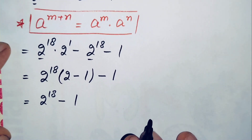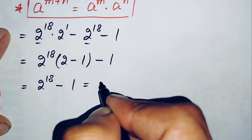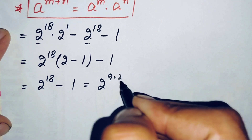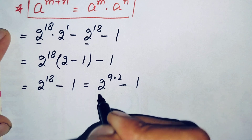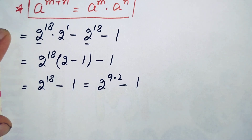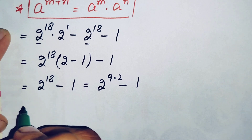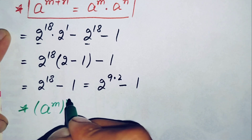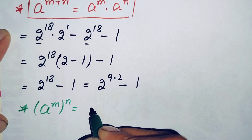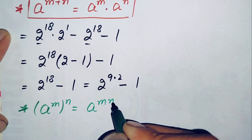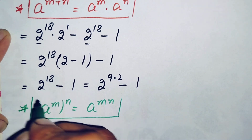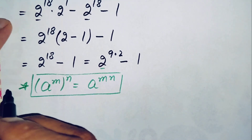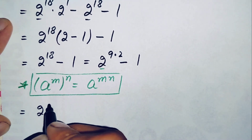Next we can write 2 raised to power 18 as 2 raised to power 9 times 2, minus 1. Here in this term we will use another exponential math property: a raised to power m times n can also be written as a raised to power m raised to power n. Using this property, the first term becomes 2 raised to power 9, squared.